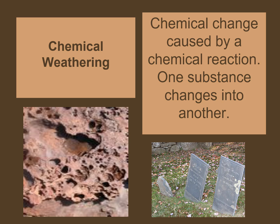The second type of weathering is chemical weathering, which involves a chemical change caused by a chemical reaction — one substance changes into another. Chemical weathering occurs when chemicals in rain and moving water react with rocks and minerals to change or weaken them. It always causes some type of chemical reaction within the rock or minerals themselves. Chemical processes need water and occur more rapidly at higher temperatures, making them more common in warm and wet climates.